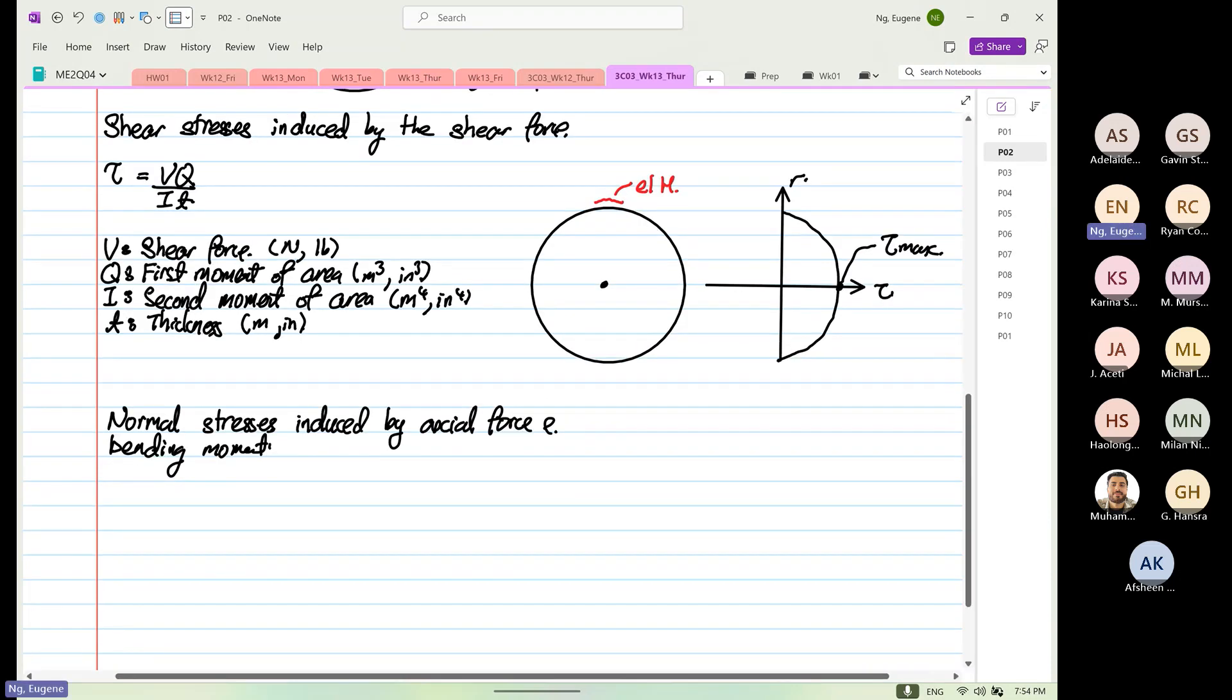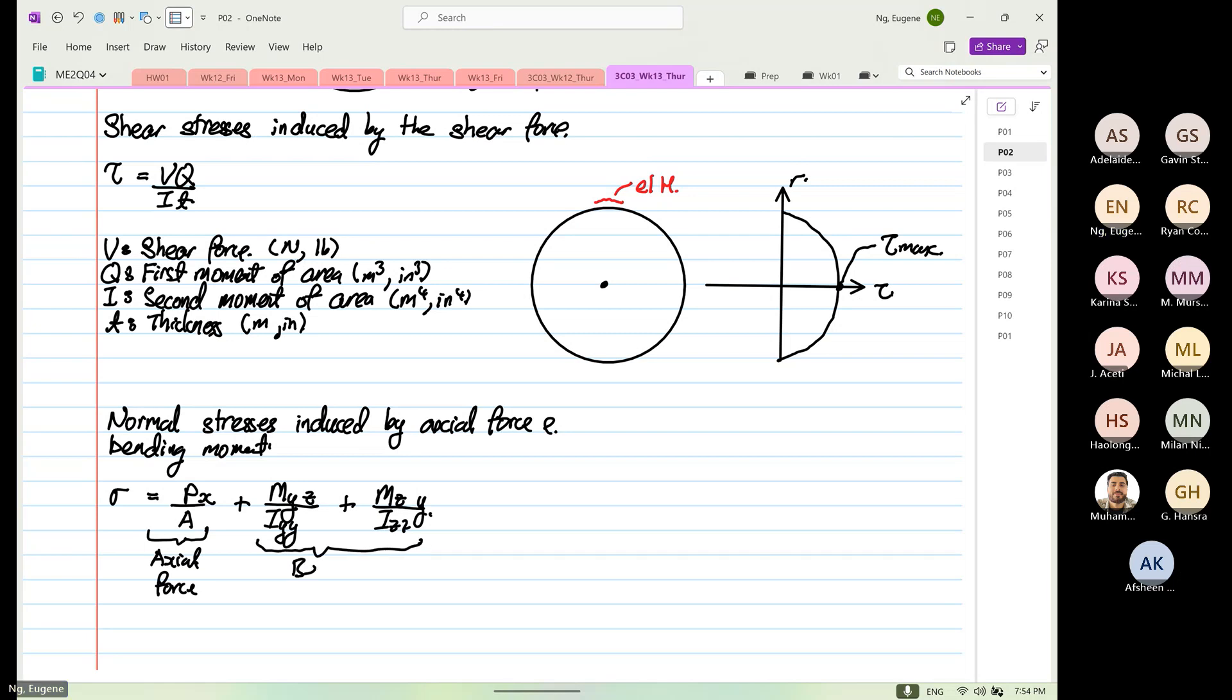Induced by axial force and bending moment. So we have normal stress σ equals P_x over A plus M_y over I_yy multiplied by z plus M_z over I_zz multiplied by y. Over here, this is due to axial force, and over here is due to what? Bending moment.